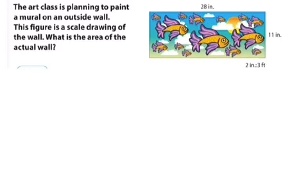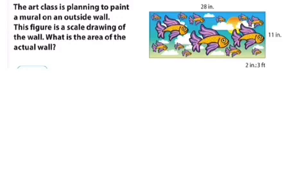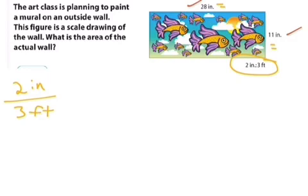So let's talk about solving for scale. This word problem says the art class is planning to paint a mural on an outside wall. They're going to paint this full picture right here on a wall. This figure is a scale drawing of the wall. What is the area of the actual wall? We know that the length is 28 inches and the width is 11 inches. Now we have some important information right here. That is our scale. They show it as a ratio. It says 2 inches represents 3 feet in this drawing. First we want to convert these measurements. 28 inches in the length. Well, every 2 inches is 3 feet.